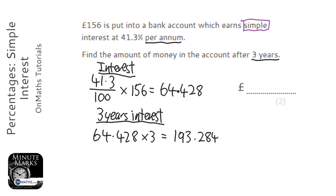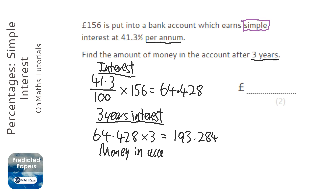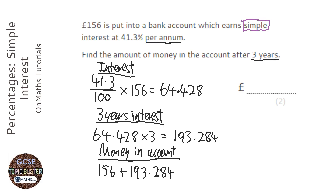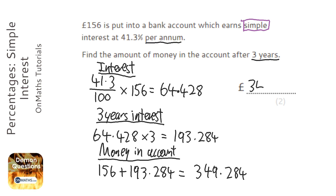Now it says how much money is in the account. So for money in account, if the interest is 193.284, we just do 156 plus 193.284. Adding 156 onto that value gives me 349.284. Now with money we always round to two decimal places, so it's going to be 349.28 because that 4 is less than 5.